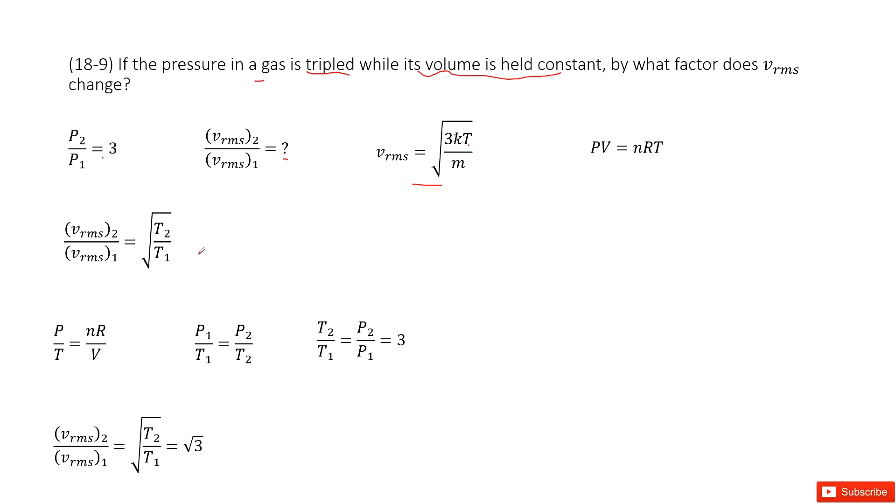Because we know PV equals nRT for an ideal gas. So in this case, we find that vrms,2 over vrms,1, the ratio for speed for final state over initial state, is square root of T2 over T1, because k and m are constant.